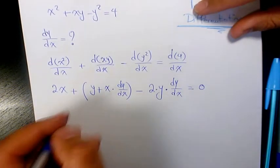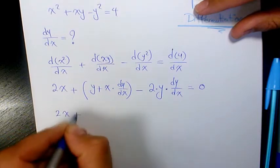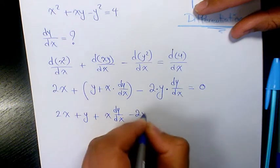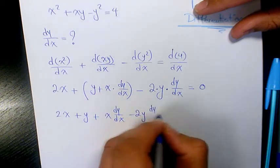Then it's 2x + y + x·(dy/dx) - 2y·(dy/dx) = 0.